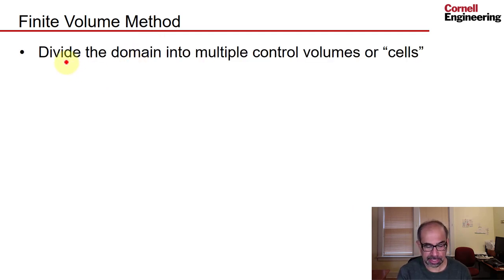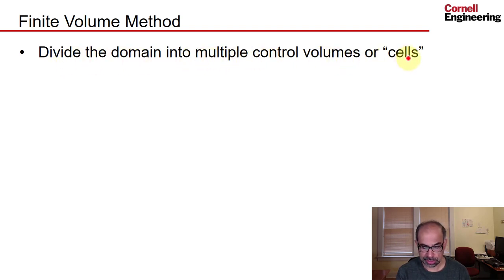And here are the big ideas in the finite volume method. We take the domain and we divide it into multiple control volumes or cells. In our case, the domain is a rectangle. And schematically, I've shown it being divided here into 12 cells or control volumes. For instance, that is a cell or a control volume. And we have 12 of these here.